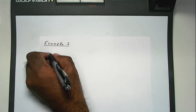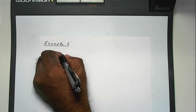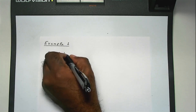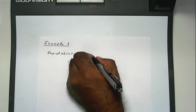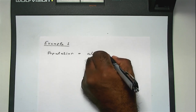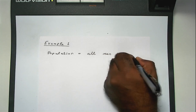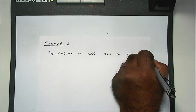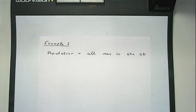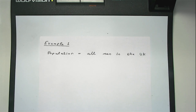In this example, the population could be all men in the UK. Obviously there are millions of men in the UK, so the population is something you cannot access physically. It's impossible to contact every single man in the United Kingdom, because there are so many. The population is something you cannot physically access.